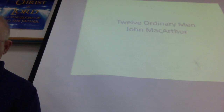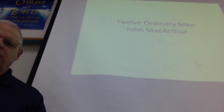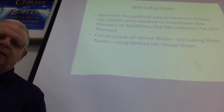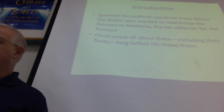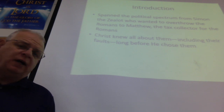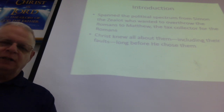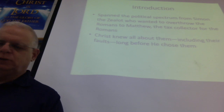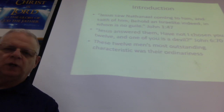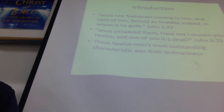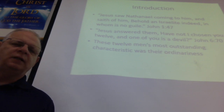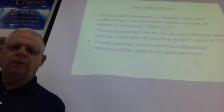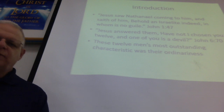We're looking at the bottom of page 7 and John MacArthur's book, Twelve Ordinary Men — just an introduction. As you look at those 12 men, they span the political spectrum: you've got Simon the Zealot, who wants to overthrow the Roman government by any means including violence, all the way to Matthew the tax collector who's working for the Romans. Christ knew all about them — he knew their faults long before he ever chose them. He saw Nathanael coming and said, 'Behold, an Israelite indeed, in whom is no guile.' And Nathanael said, 'How did you know me?'